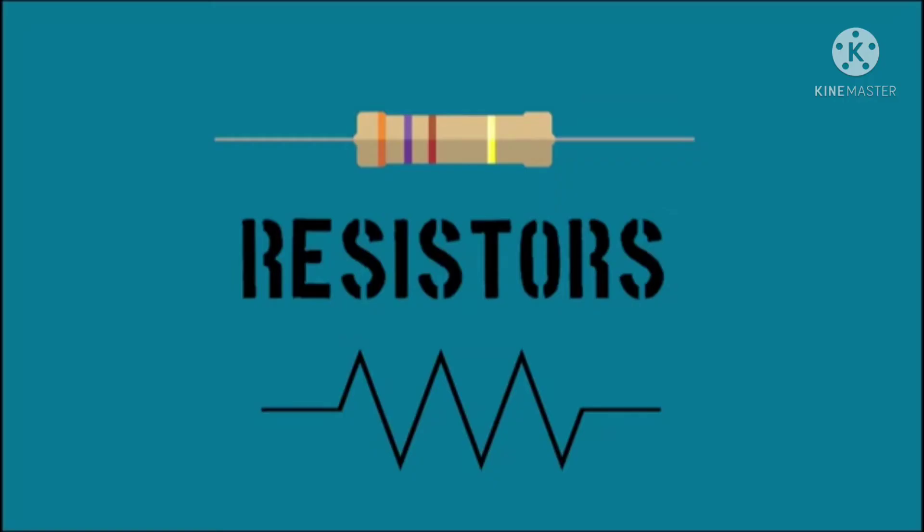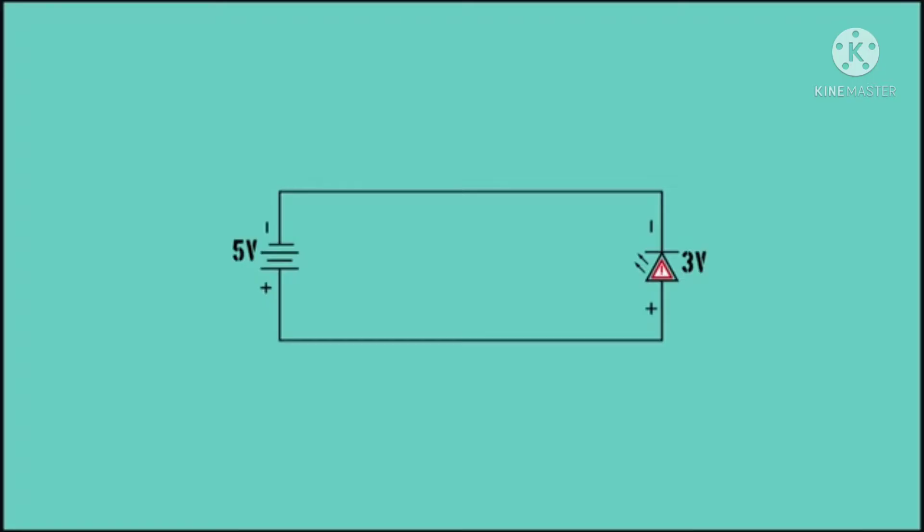To start, we will talk about the resistor. It is one of the most common and practical electrical components. Its basic function is to limit current flow in a circuit. For example, here...